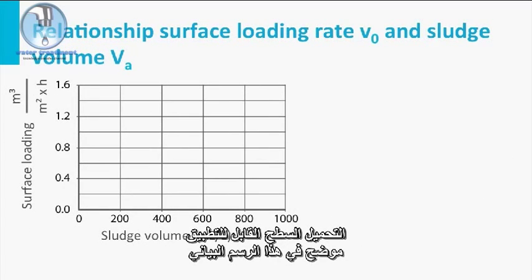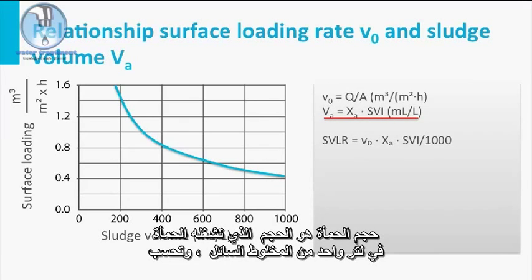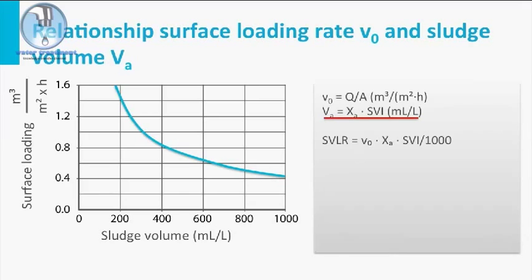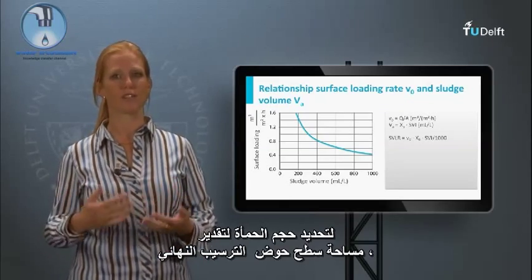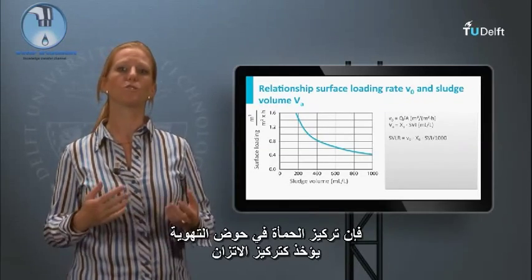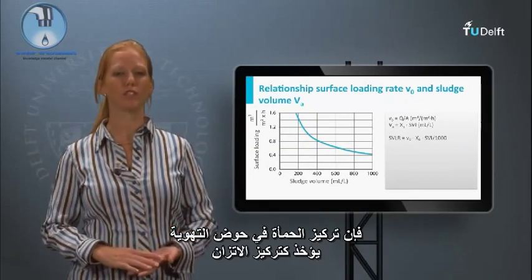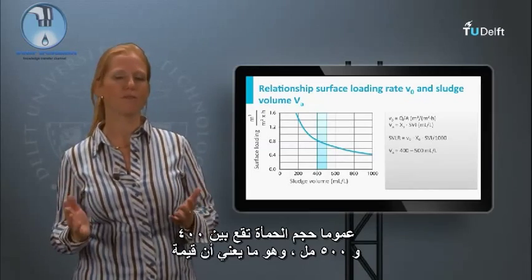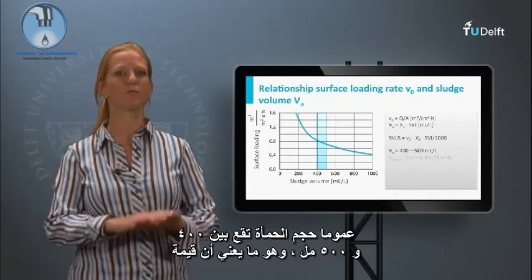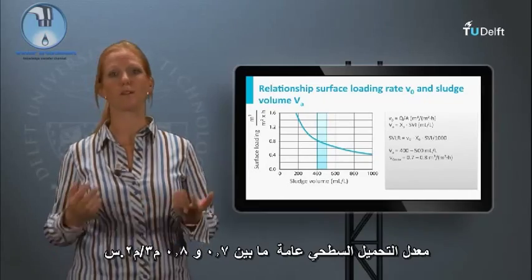The applicable surface loading is visualized in this graph. The sludge volume is the volume that the sludge occupies in one liter of mixed liquor, calculated by multiplying the sludge volume index times the sludge concentration. To determine the sludge volume and estimate the surface area of the final clarifier, the sludge concentration in the aeration tank is taken as its equilibrium concentration during stormwater flow. Generally, the sludge volume lies between 400 and 500 milliliters, which means that the general surface loading rate is between 0.7 and 0.8 cubic meters per square meter per hour.